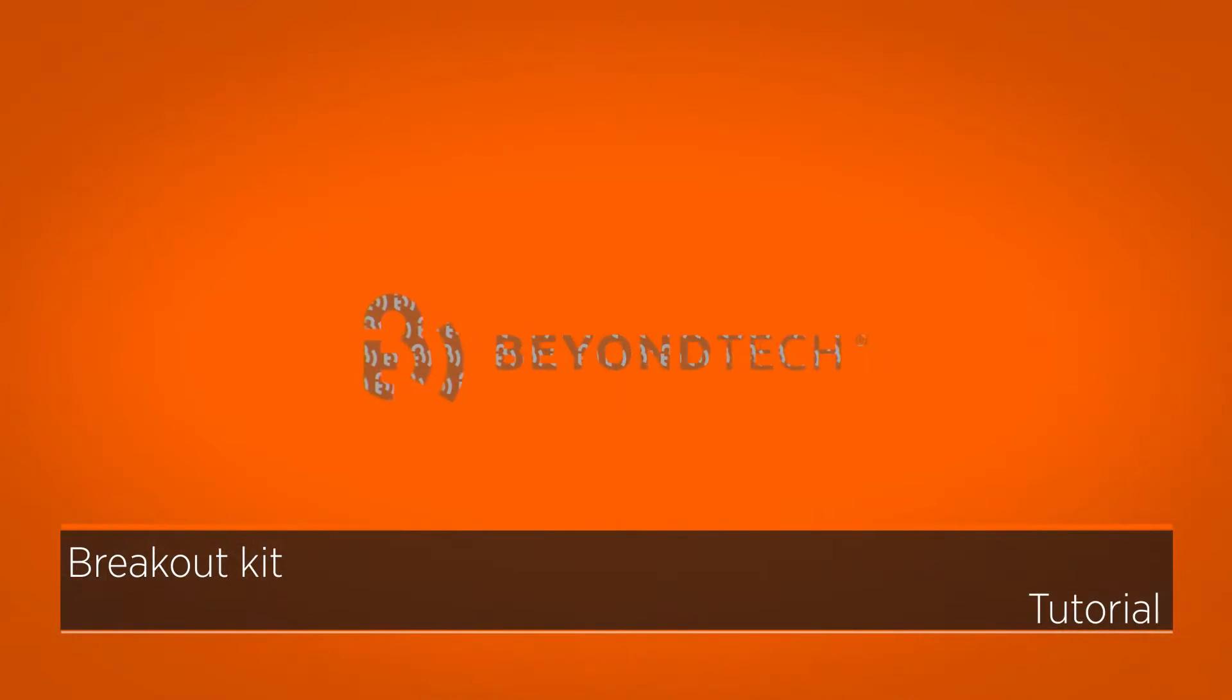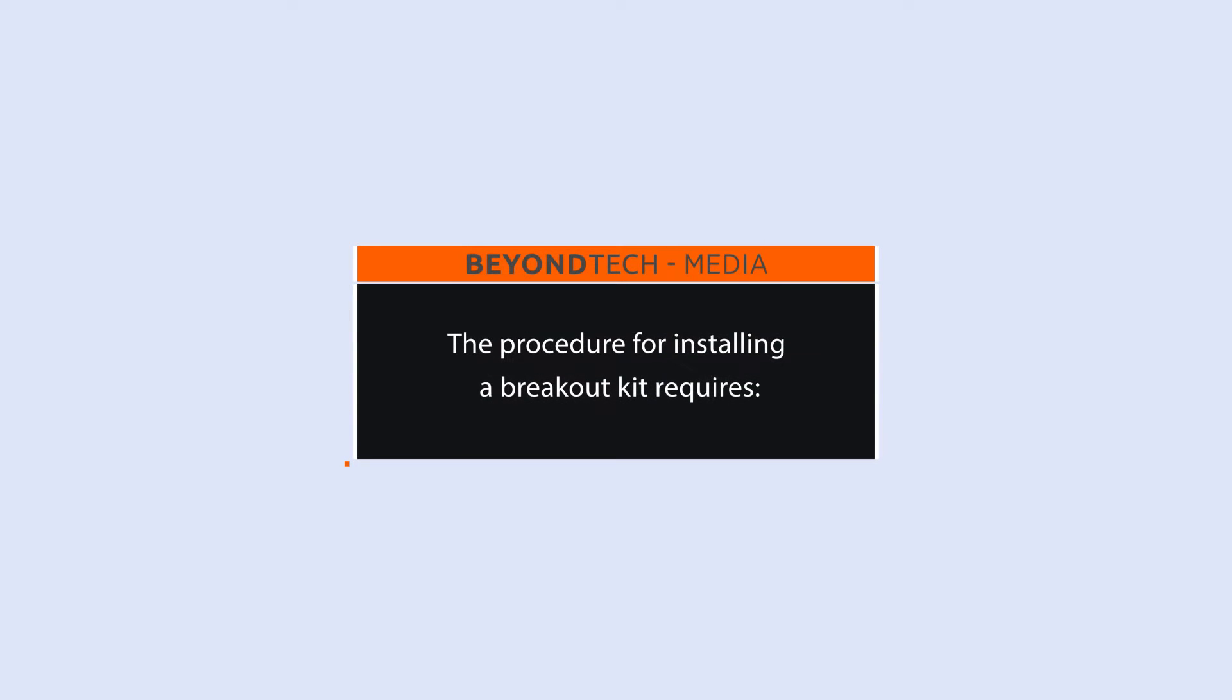Breakout kits are designed to provide protection and support when terminating loose tube fiber cables because they allow you to put 250 micron delicate fibers into 900 micron buffered coatings that are suitable for numerous applications. The procedure for installing a breakout kit requires the following tools.